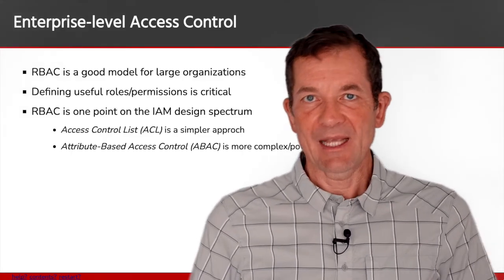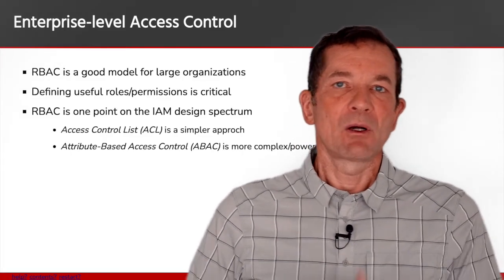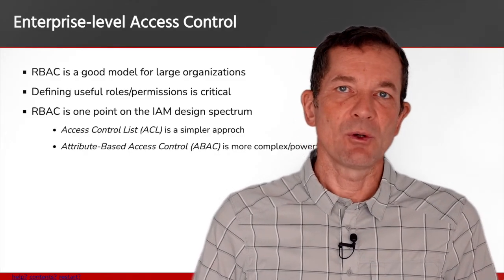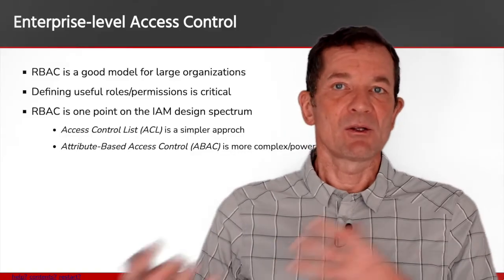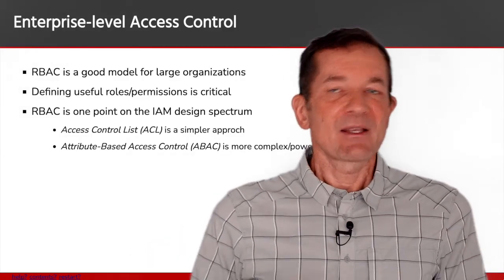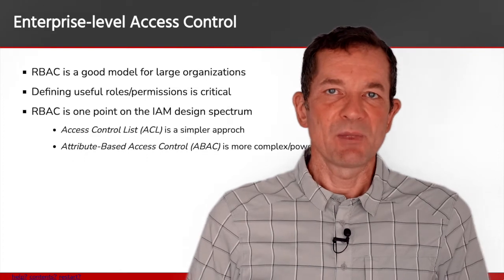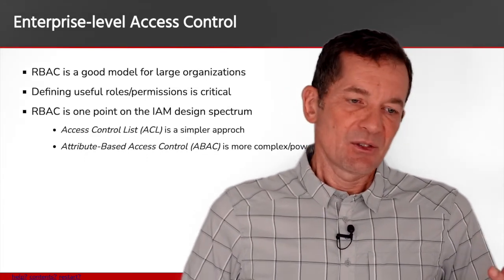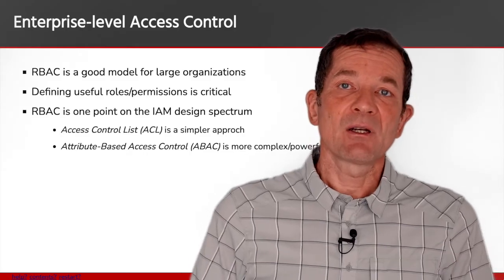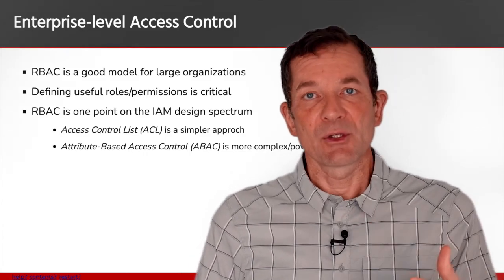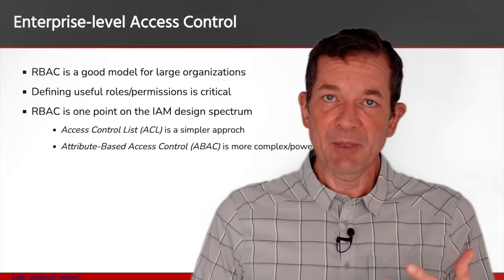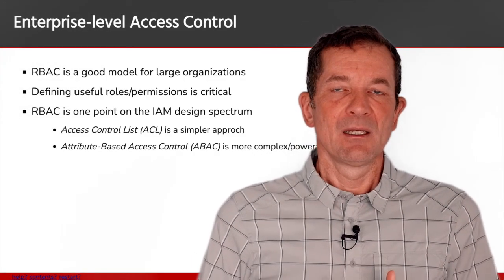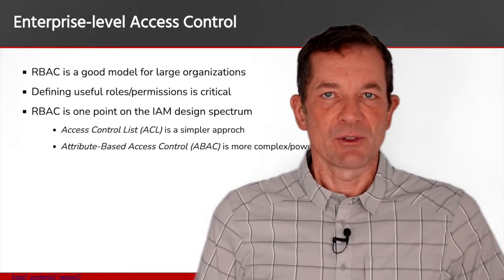There are simpler ways like traditional access control lists. There are more complex ways such as attribute-based access control, which is more powerful but also more complex. RBAC is somewhere in the middle of this spectrum and seems to work well for many organizations today. If you're interested in RBAC, think about does it work for me, but also think about if it doesn't work well, maybe I should use an alternative.